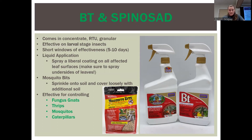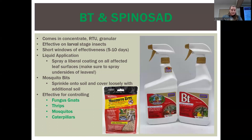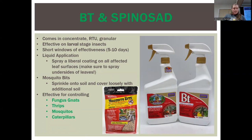Bt — Bacillus thuringiensis — and spinosad come in concentrate, ready to use, and granular as mosquito bits. For liquid application, spray a liberal coating on all affected leaf surfaces, including undersides. Mosquito bits are really easy to apply — just sprinkle them onto the soil, cover loosely with additional soil since they look a bit ugly after they swell when the plant is watered. This will control fungus gnats, thrips, mosquitoes, and caterpillars — particularly things in larval stages that have very soft skin.